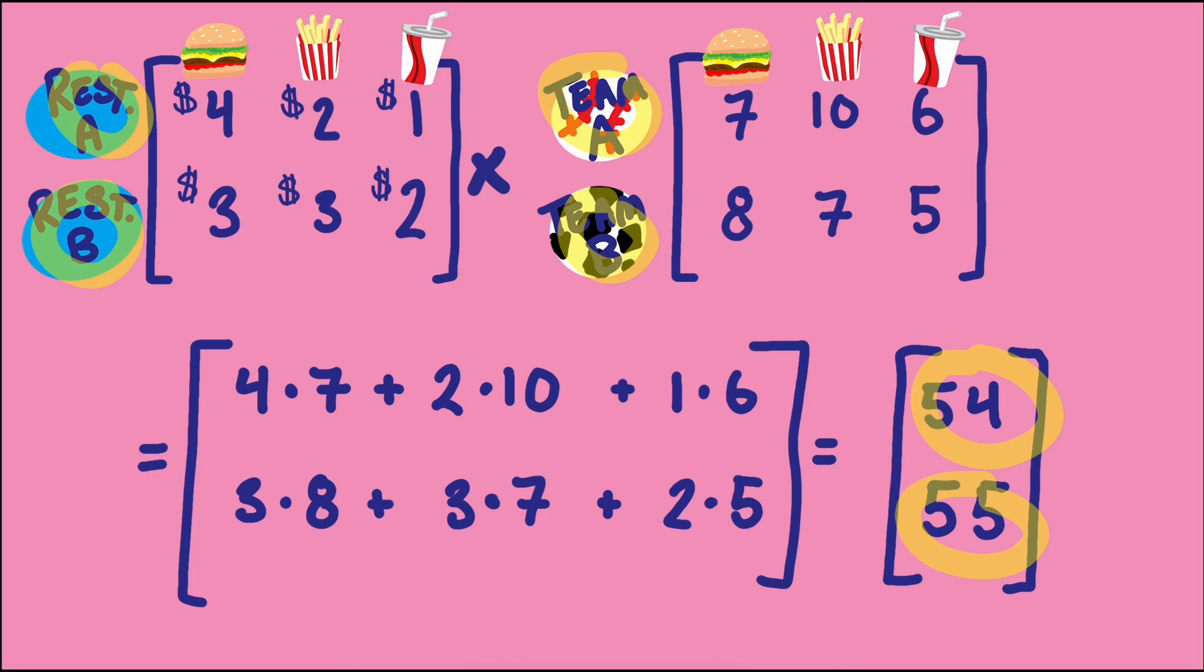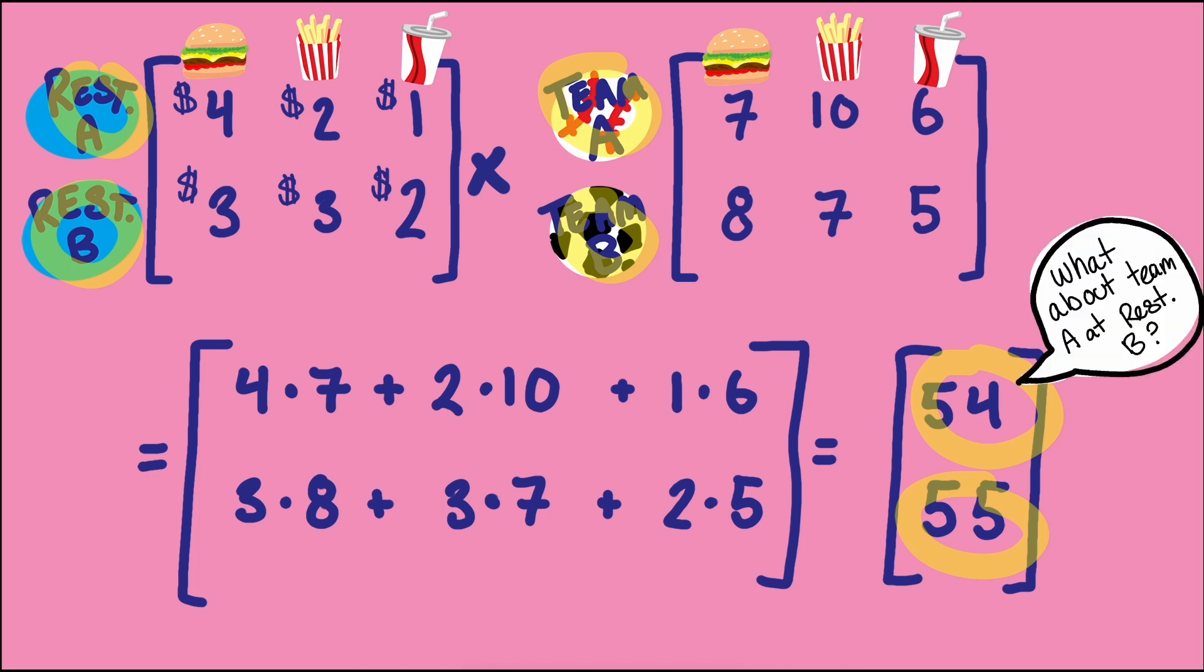When we do this, we have a total for team A at restaurant A and team B at restaurant B. But now we see a problem. First, we won't get all possibilities of the total matrix on the right hand side. And second, if we didn't have labels, we wouldn't know where to put them in the total matrix.